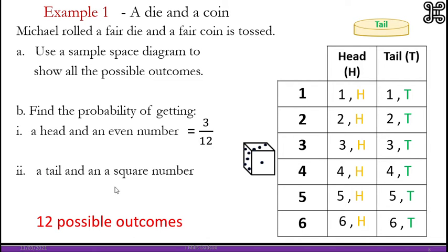A tail and a square number. You must know what your square numbers are. 1, 4, 9. We've gone past 6, so it's 1 and 4. These are the only square numbers. We want a tail with it. So it's only 2 out of 12.